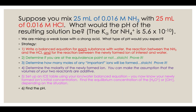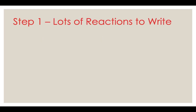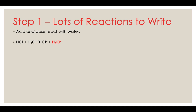Step one: lots of reactions to write. The first ones are the acid and base reacting with water, which tells us the important ions to worry about. Hydrochloric acid is a strong acid — it completely ionizes into chloride and hydronium, so the key ion is hydronium. When ammonia is put in water, you get a little ammonium and hydroxide, but since ammonia is a weak base, it stays mostly as molecules — so the important molecule is ammonia.